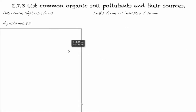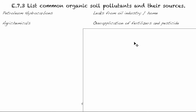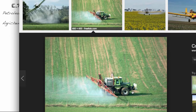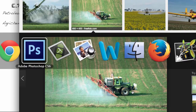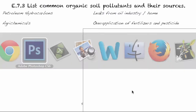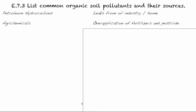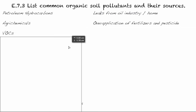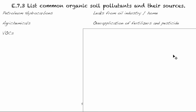Our second one is agrochemicals. Agrochemicals come from over-application of fertilizers and pesticides. When you're doing a lot of that but taking it too far, it can seep into the ground, collect, and bioaccumulate within the biomass around you.